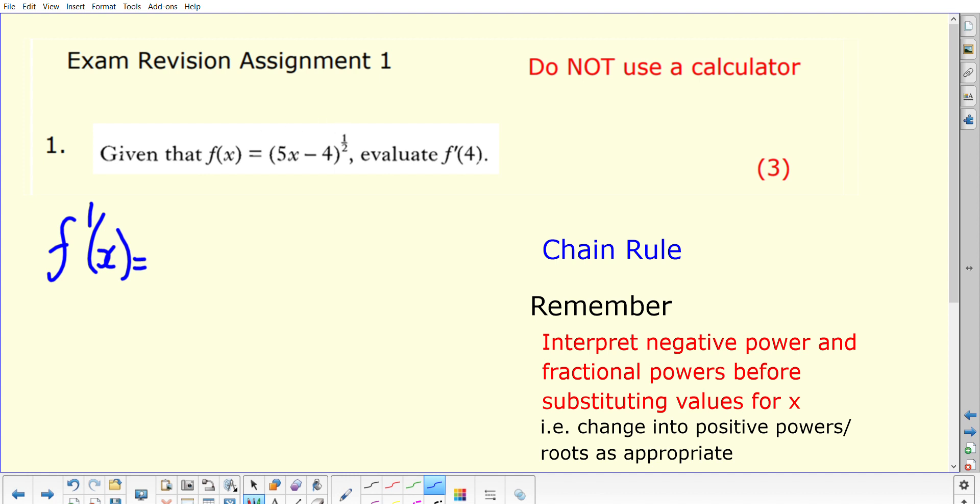In the first instance, let's differentiate the power term. The rule for differentiation is bring down the power to the front and reduce the power on your term by one, so you'd end up with negative a half. That's the first bit of the chain rule. Now we also need to multiply by the derivative of the term inside the bracket, which in this case is 5x minus 4, and the derivative of that is just 5.